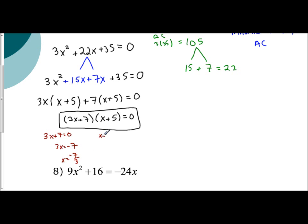I have x plus 5. I'm going to set it equal to 0 and solve. So subtract 5, x is negative 5. And so my answer, my final answer, is x equals negative 7 thirds and x equals negative 5.